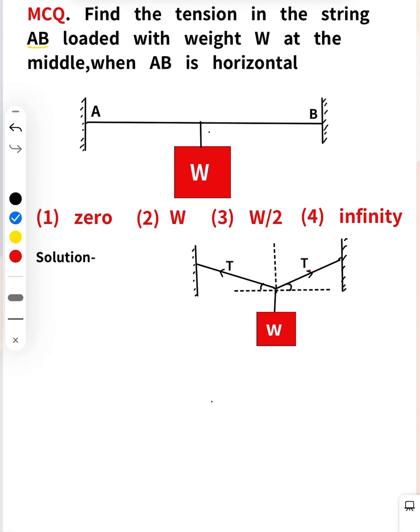Now the corresponding question: find the tension in the string AB loaded with weight W at the middle. If total length is L, then that is L/2 and L/2. This is the midpoint, C is the midpoint.